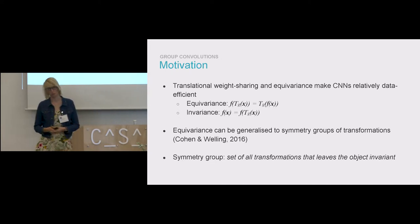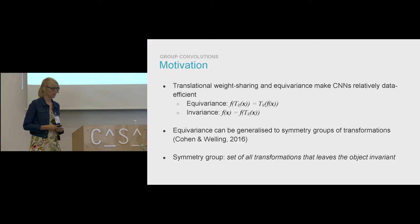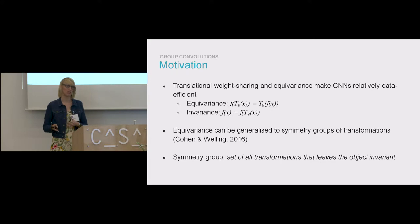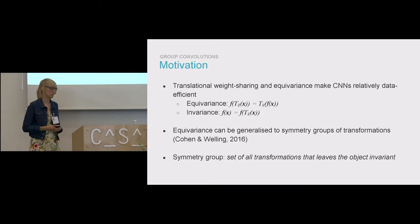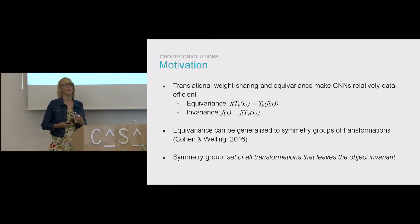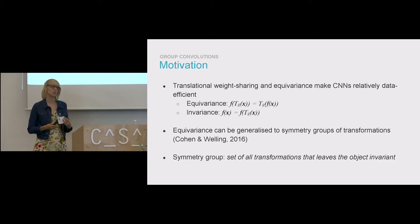Before we talk about group convolutions, let's first talk about why convolutional neural networks are the appropriate choice for image analysis. Convolutional layers apply the same filter at each position in the image, thereby reusing the weights. Because we use the same set of filters at multiple locations, a translational shift in the input will result in the same translational shift in the output — this is known as equivariance. Because we also reduce the spatial dimension, the whole network becomes invariant to translation, which means a shift in the input image will not affect the output label. This is appropriate for image analysis because images exhibit translational symmetry, but images also exhibit other types of symmetry, such as rotation and reflection.